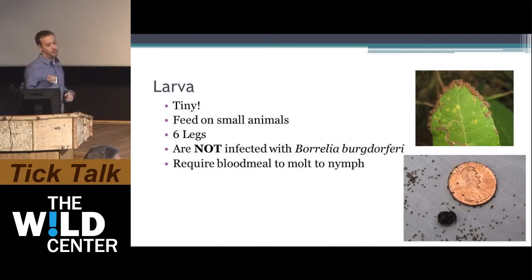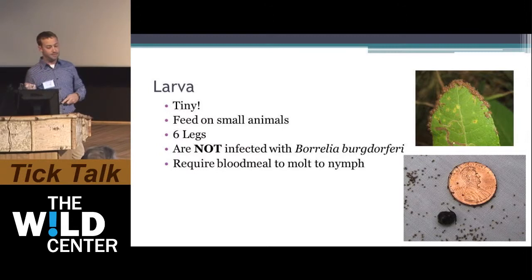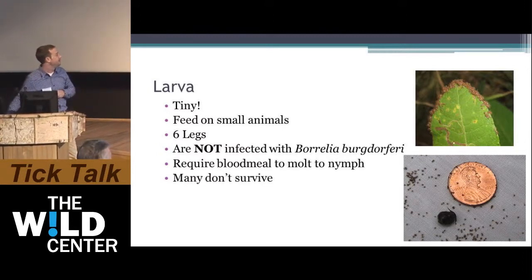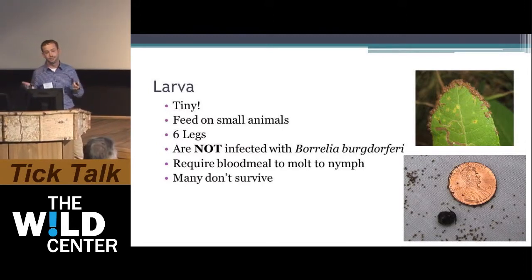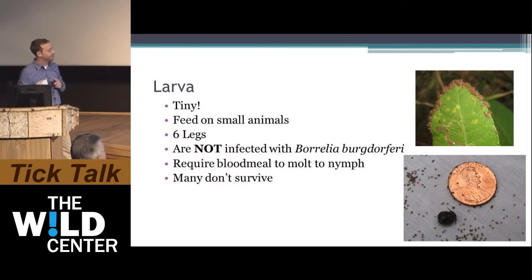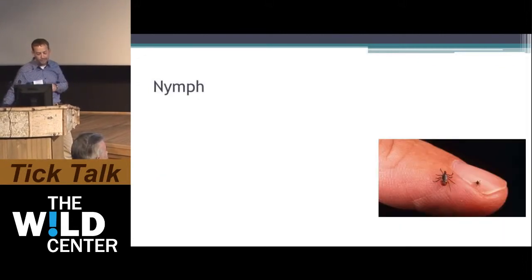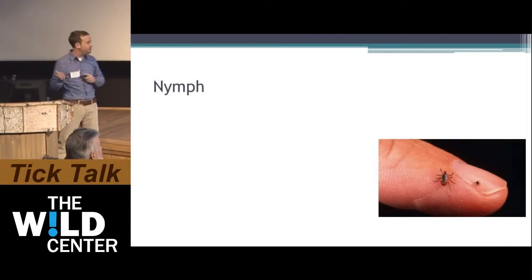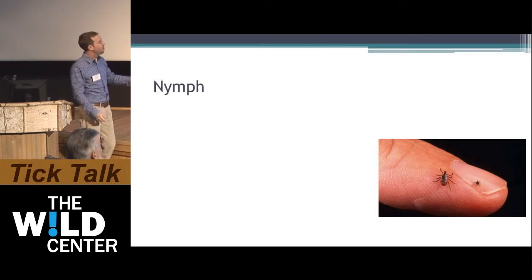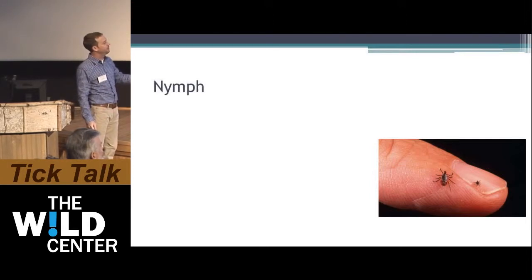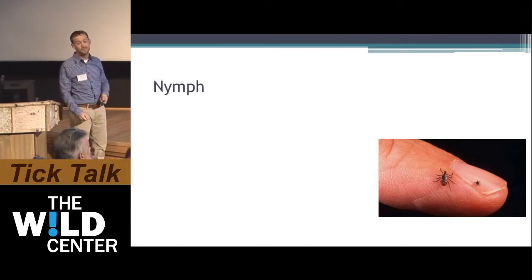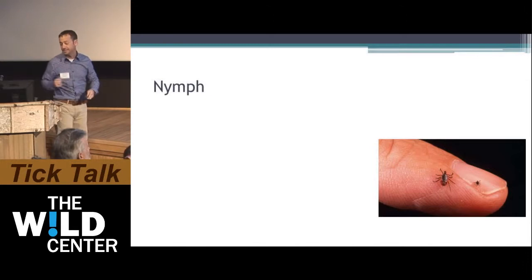The larvae require a blood meal to molt to the nymph. Every stage requires a blood meal. Many actually don't survive — lucky for us, or we'd be overrun by ticks. The next stage is the nymph. The nymph is still very, very small compared to the adult.